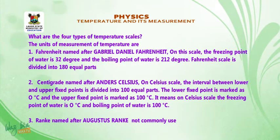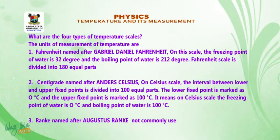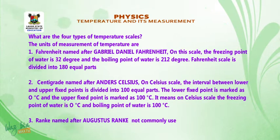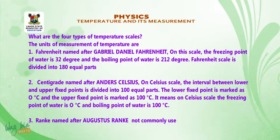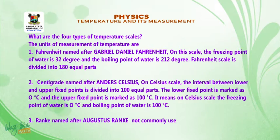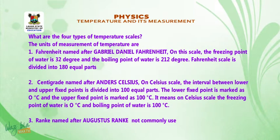2. Celsius, named after Anders Celsius. On the Celsius scale, the interval between the lower and upper fixed points is divided into 100 equal parts. The lower fixed point is marked as zero degrees Celsius and the upper fixed point is marked as 100 degrees Celsius, meaning the freezing point of water is 0°C and the boiling point is 100°C.